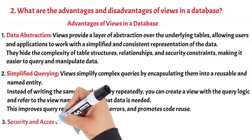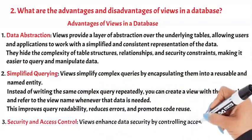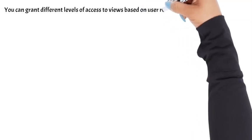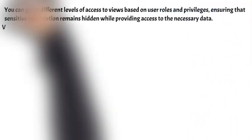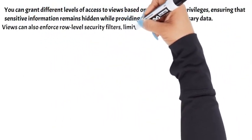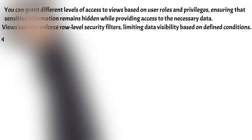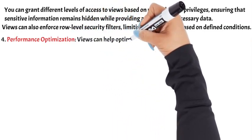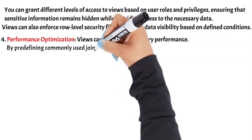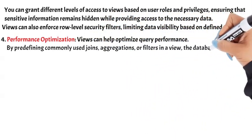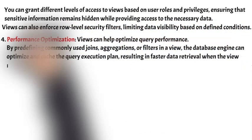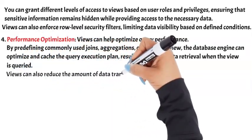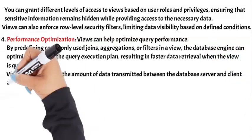3. Security and Access Control. Views enhance data security by controlling access to specific columns or rows. You can grant different levels of access to views based on user roles and privileges, ensuring that sensitive information remains hidden while providing access to the necessary data. Views can also enforce row-level security filters, limiting data visibility based on defined conditions. 4. Performance Optimization. Views can help optimize query performance by pre-defining commonly used joins, aggregations, or filters, allowing the database engine to optimize and cache the query execution plan, resulting in faster data retrieval.